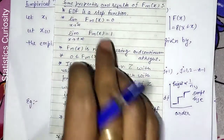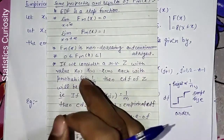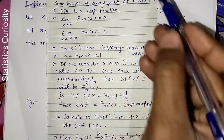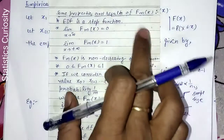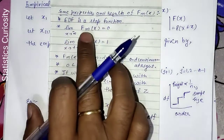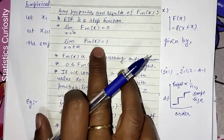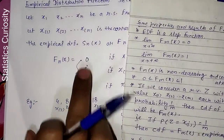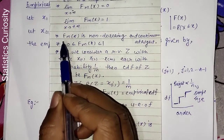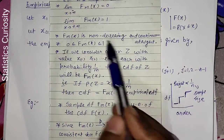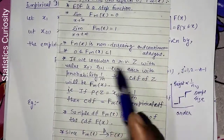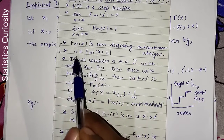So the first property of the EDF is that it is a step function or jump function. The second property: the limit of FNx as x → −∞ equals 0, and as x → +∞ equals 1. We have already seen this in the definition of FNx. The third property is that it is non-decreasing and right-continuous. Both properties follow directly from the definition.